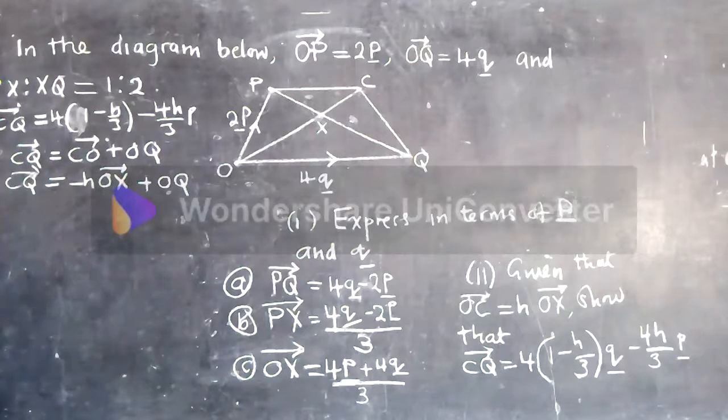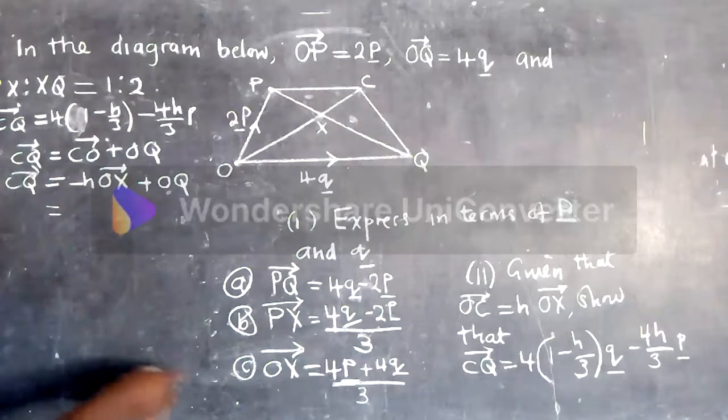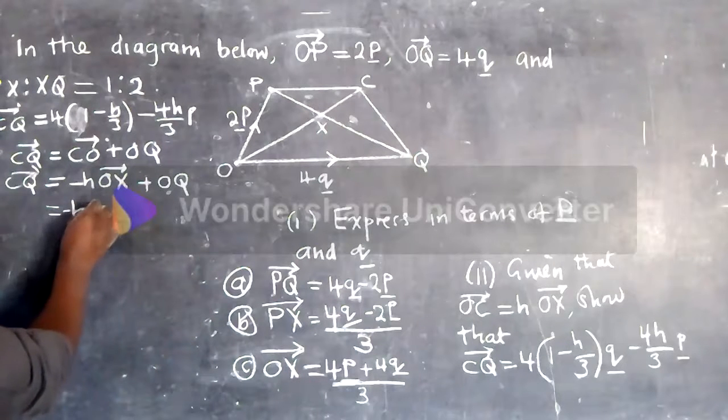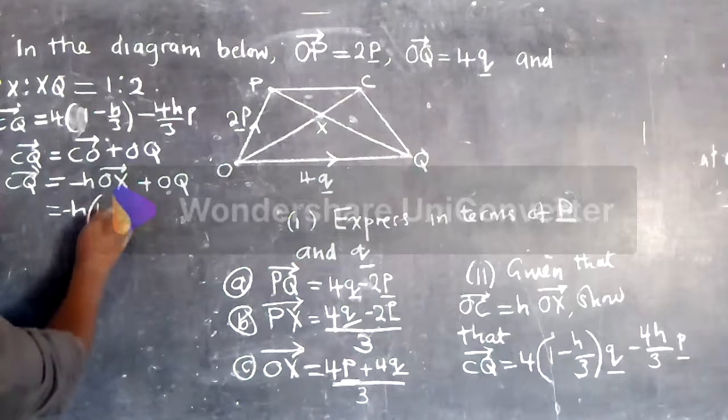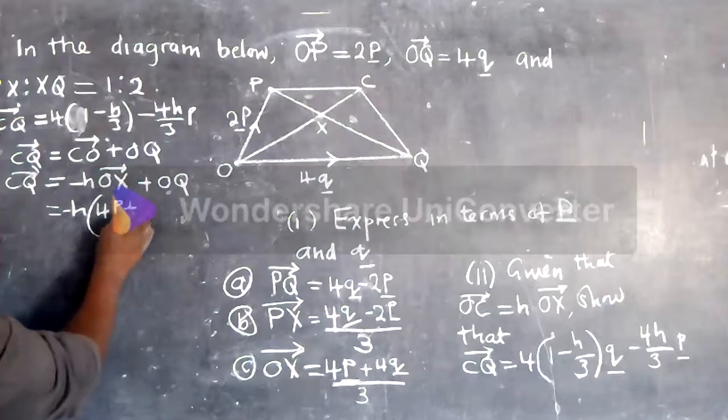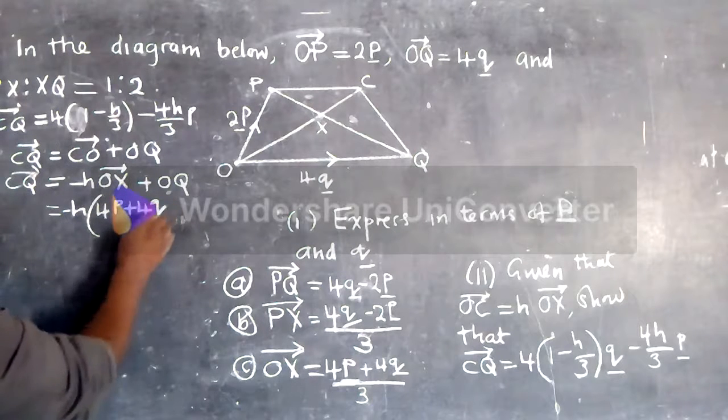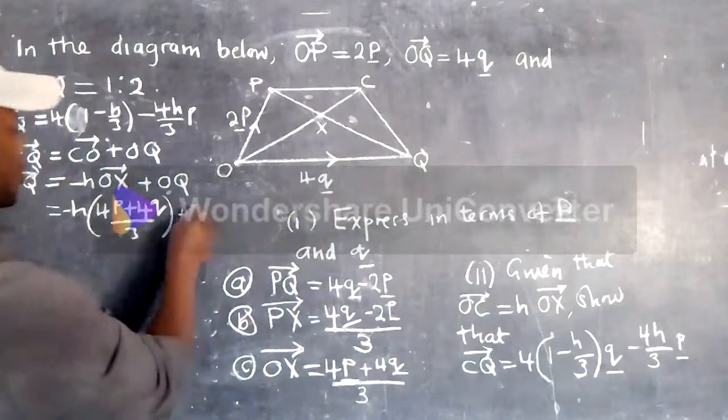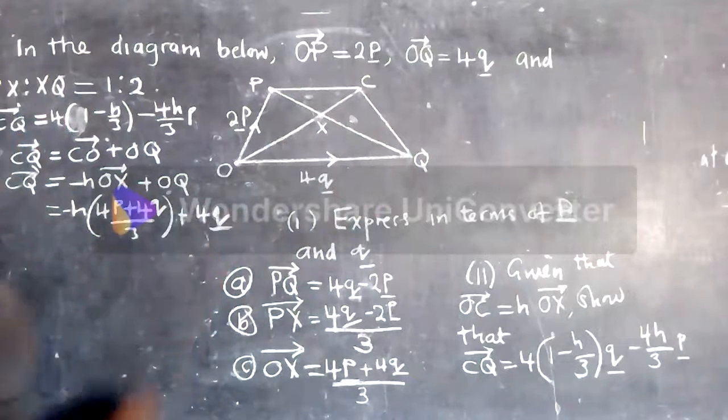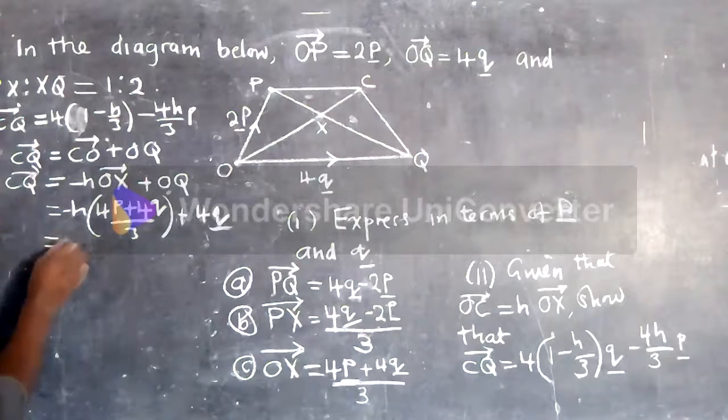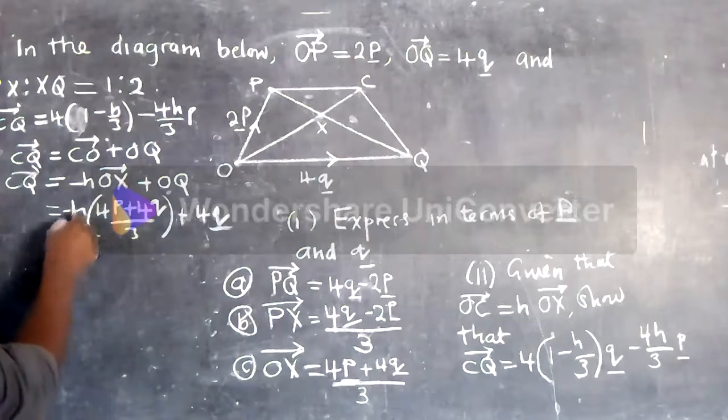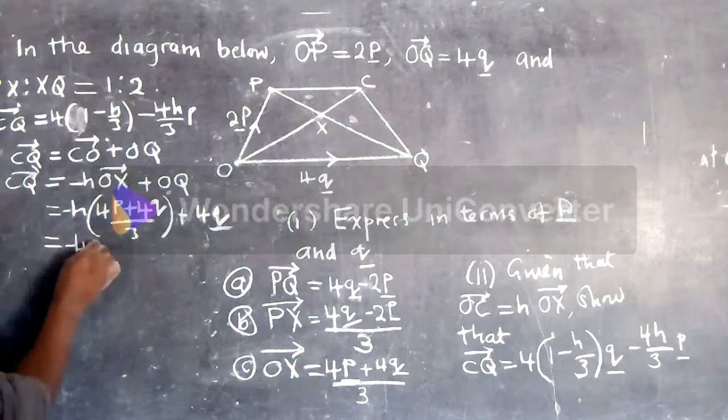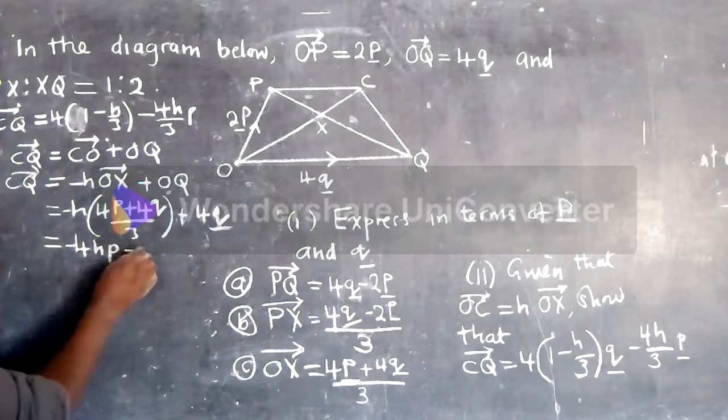Now we have negative H, so we have something like 4 negative 4HP minus 4H cube over 3 plus 4 cube.